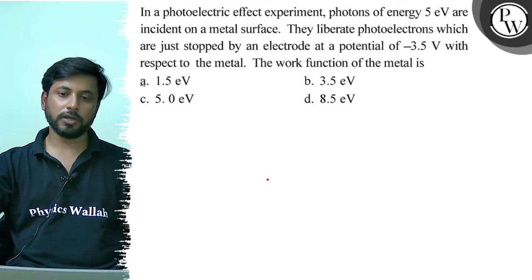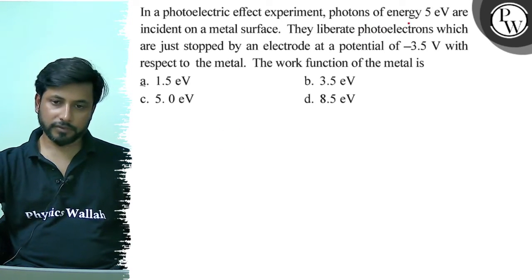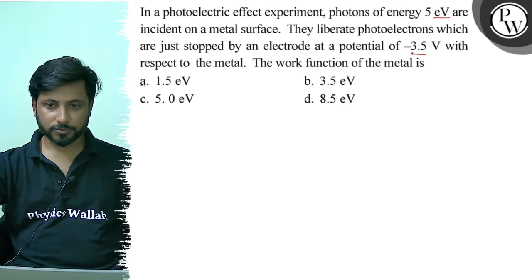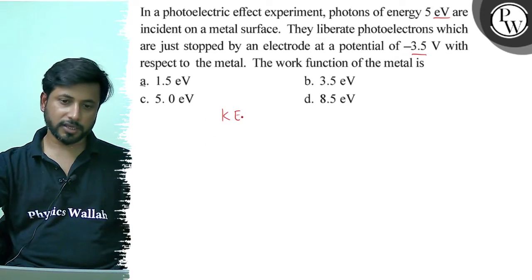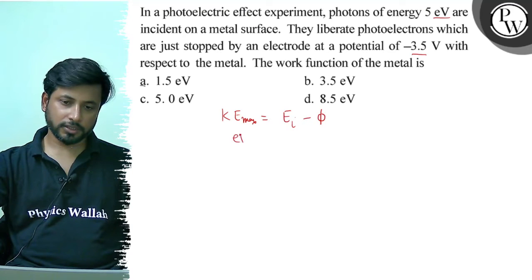So photoelectric photons energy is 5 electron volts and electrons stopping potential is 3.5 volts. We have the equation: KE_max equals E_i minus φ, or eV_0 equals E_i minus φ.